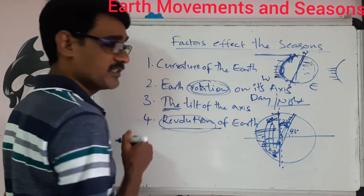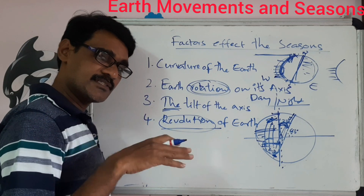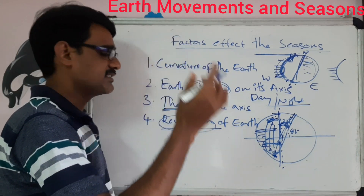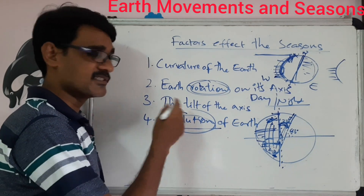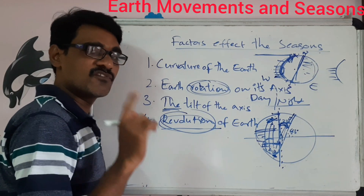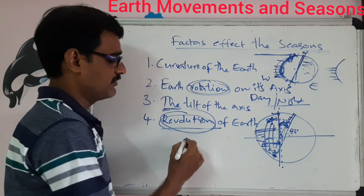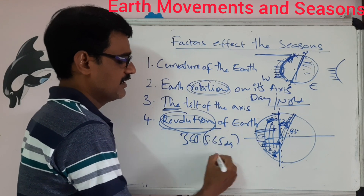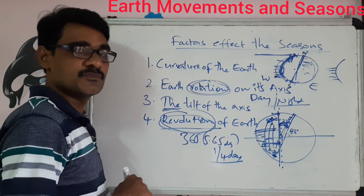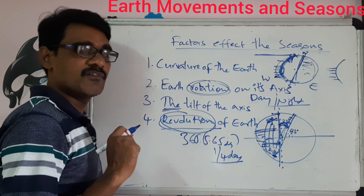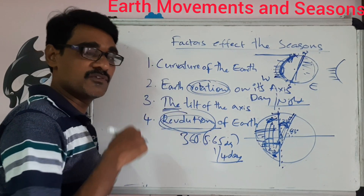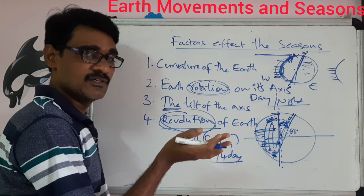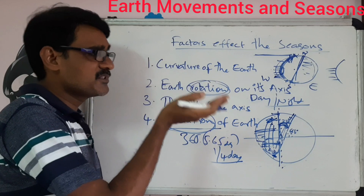The fourth factor is revolution. The earth rotates on its own axis and also moves around the sun — this movement around the sun is called revolution. It takes one day (24 hours) for rotation and 365.25 days, meaning one year, for the earth to complete one full revolution around the sun.